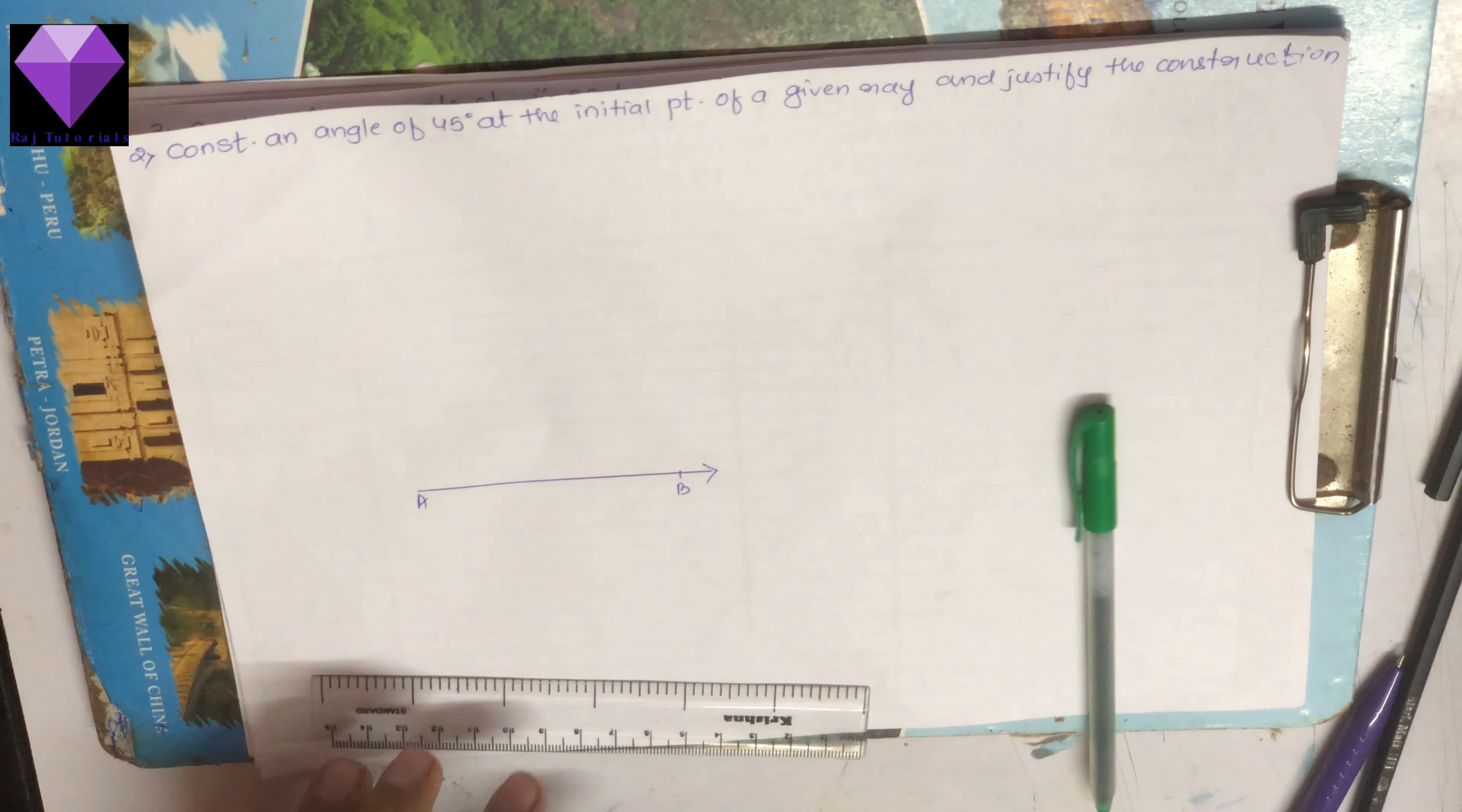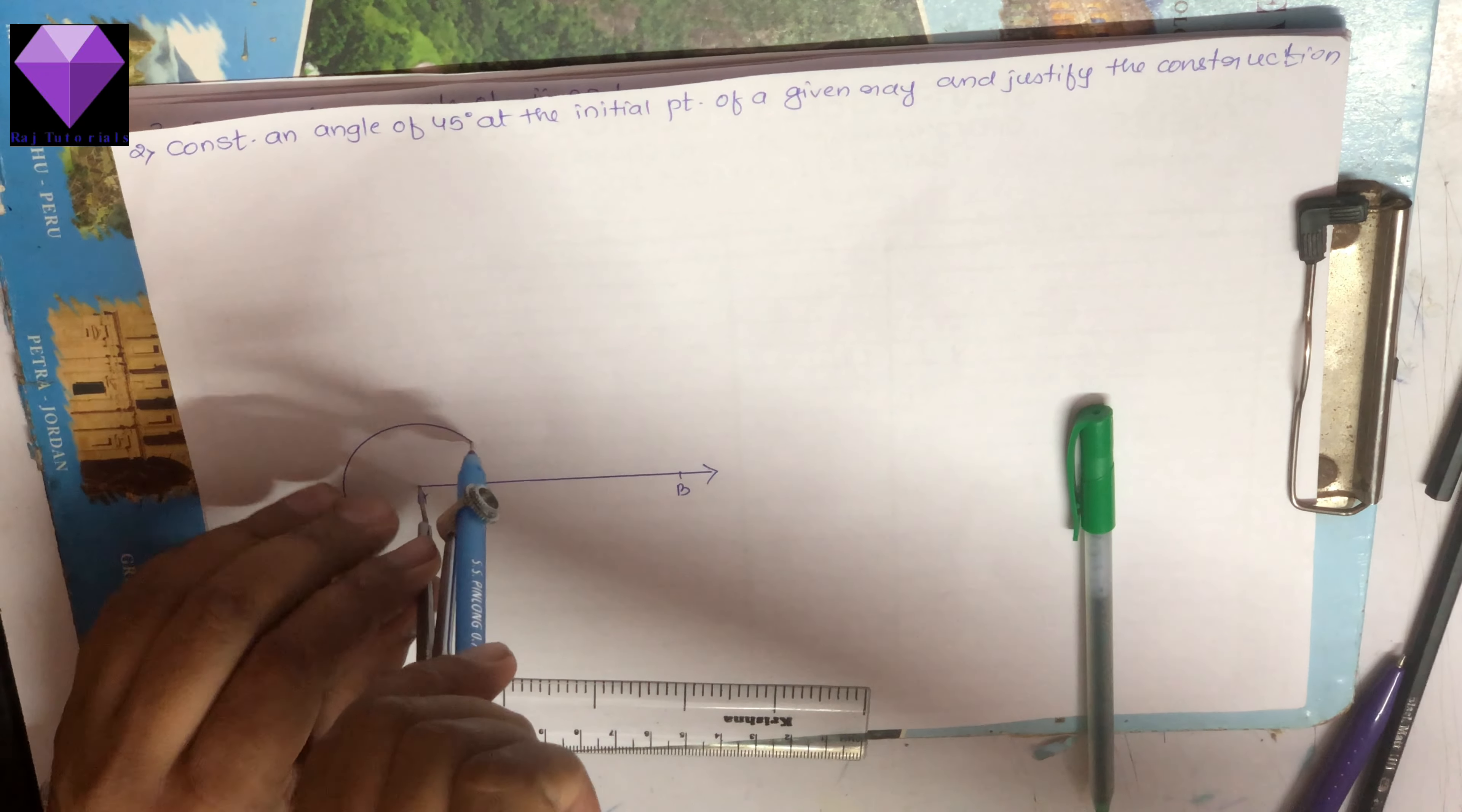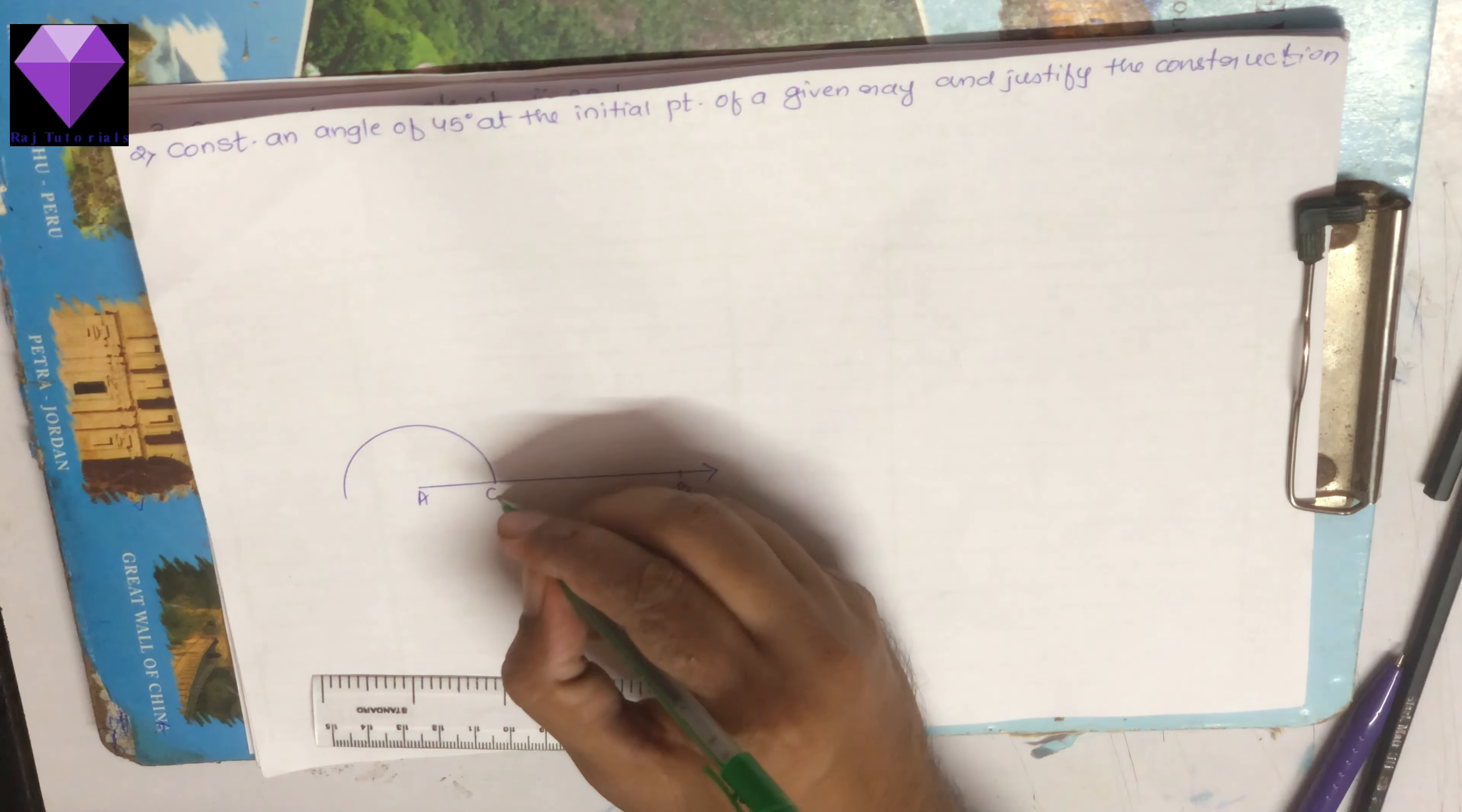Now at A, I am drawing an arc of any measurement and giving this point the name C.